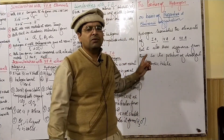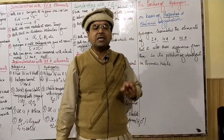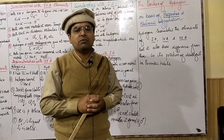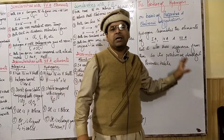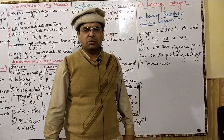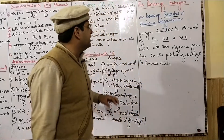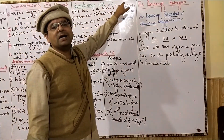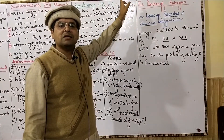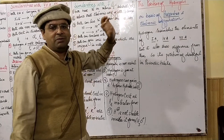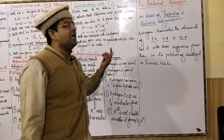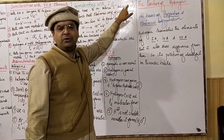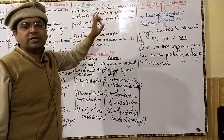Hydrogen can resemble 1A elements, 4A elements, and 7A elements, but it also shows differences from them. That's why, although hydrogen is placed over 1A, its position in the periodic table is still doubtful. Now we study its similarities with 1A elements. Both hydrogen and 1A elements are called s-block elements — both have ns¹ configuration, where n means valence shell. Hydrogen has the same electronic configuration of the valence shell as 1A (alkali metal) elements.